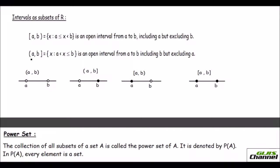The next notation is closed on the right side. It is a normal parenthesis next to A and a box bracket next to B, written as (A, B]. In that case, this side is closed, so B is included but A is excluded.